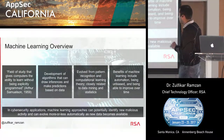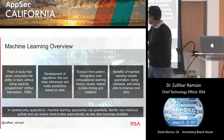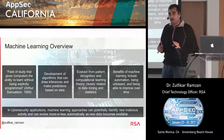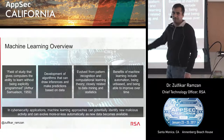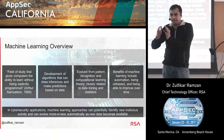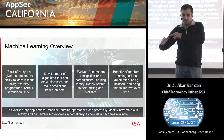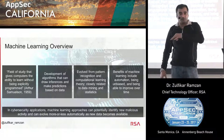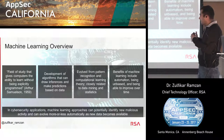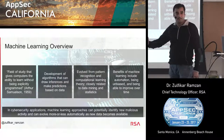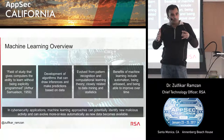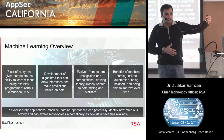Machine learning, according to Arthur Samuel, an early pioneer in artificial intelligence, is a field of study that gives computers the ability to learn without being explicitly programmed. The most remarkable thing about that definition is that it was proposed in 1959. More concretely, in technical terms, it involves developing algorithms that can draw inferences from and make predictions based on data. It's about finding the right data sources, developing techniques to extract insights automatically, and applying those insights to new instances you haven't encountered before.